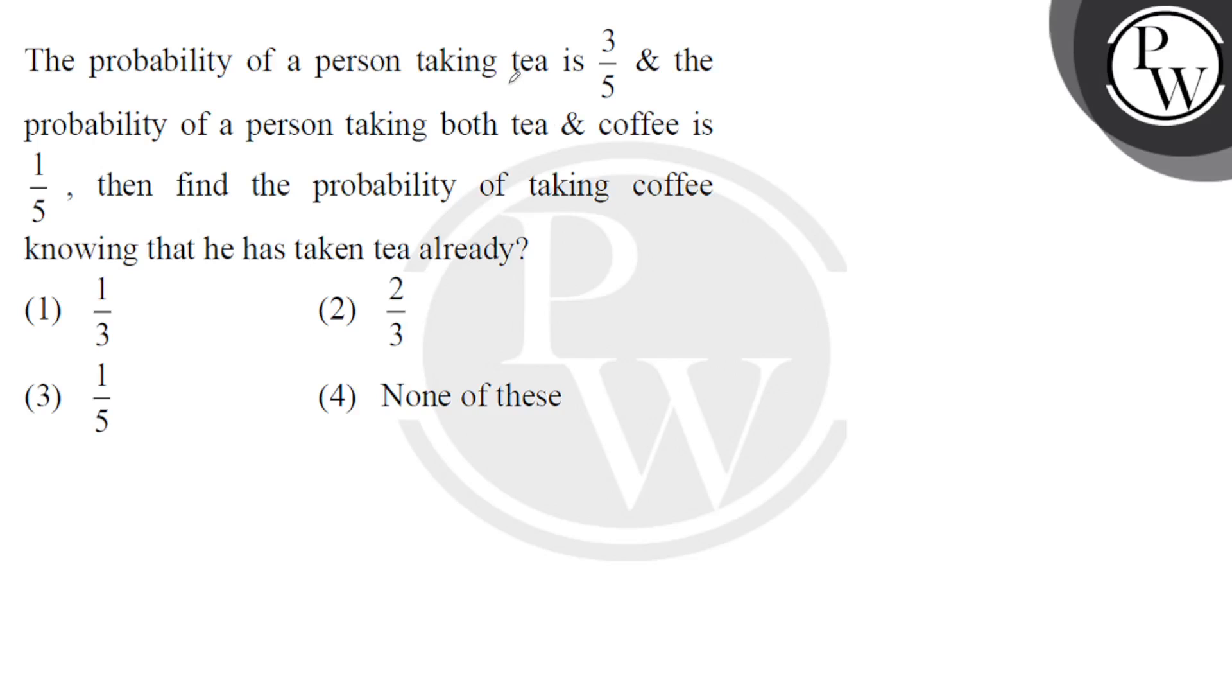Hello, I have a question here. The probability of a person taking tea is 3/5, and the probability of a person taking both tea and coffee is 1/5. Then find the probability of taking coffee knowing that he has taken tea already.